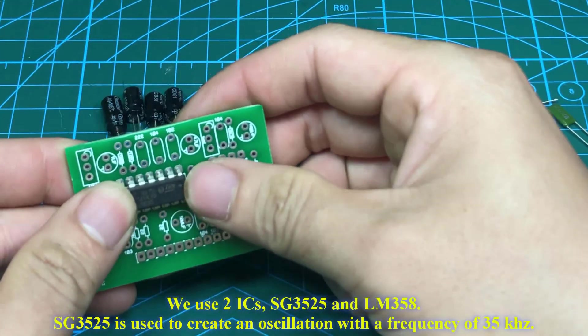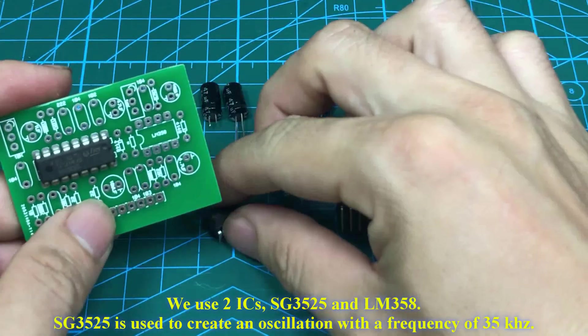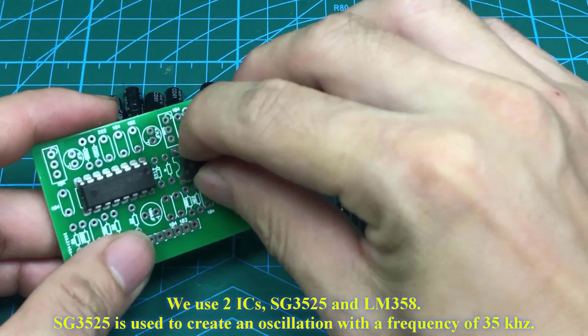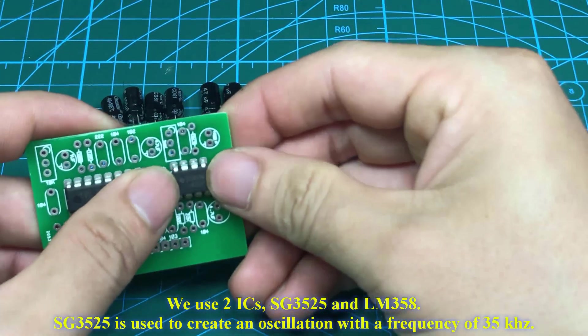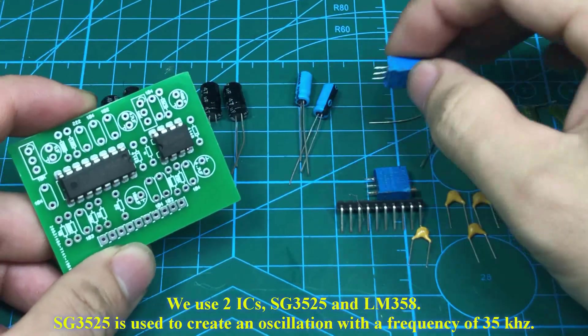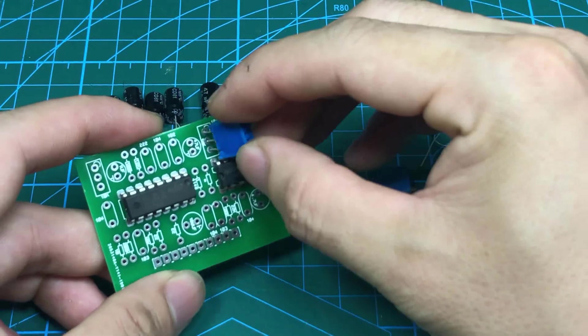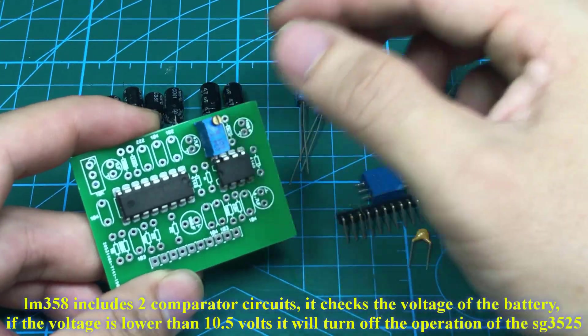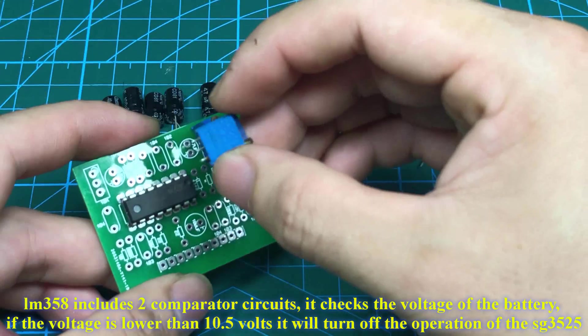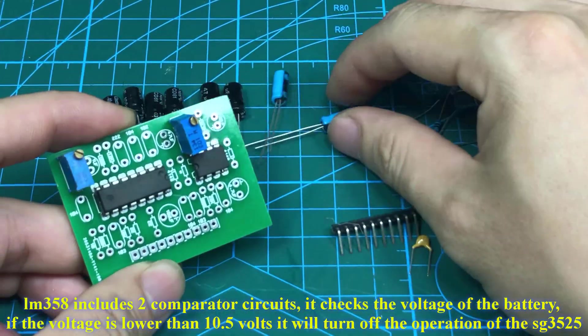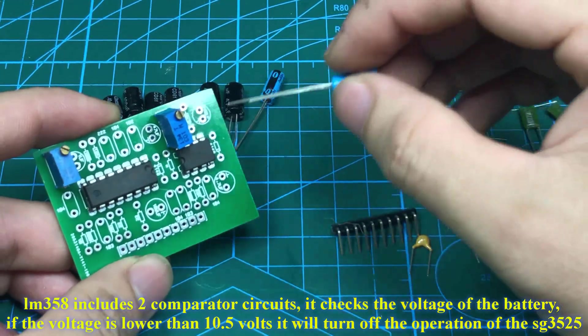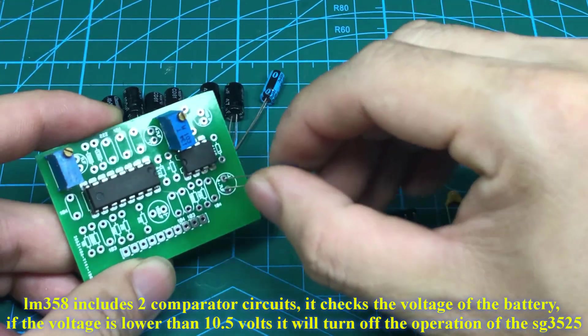We use two ICs, SG3525 and LM358. SG3525 is used to create an oscillation with a frequency of 35 kilohertz. LM358 includes two comparator circuits. It checks the voltage of the battery. If it's lower than 10.5 volts, it will turn off the operation of IC SG3525.